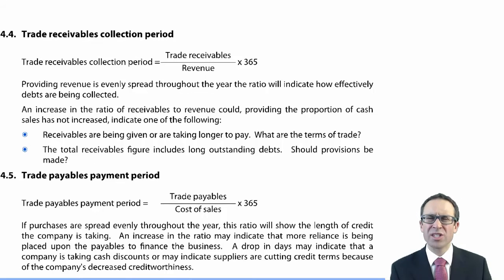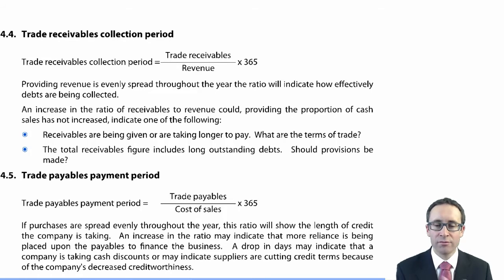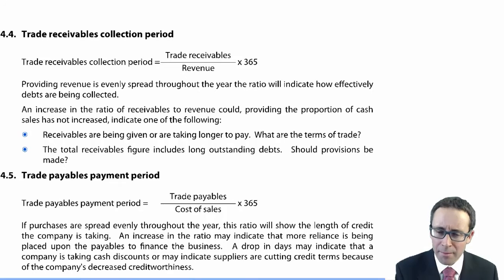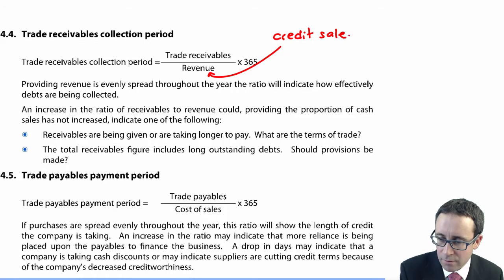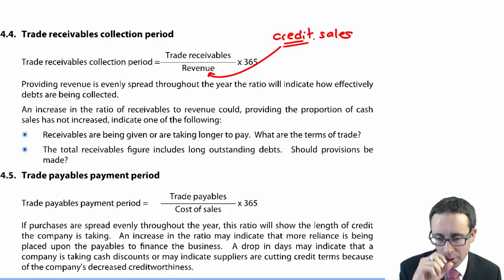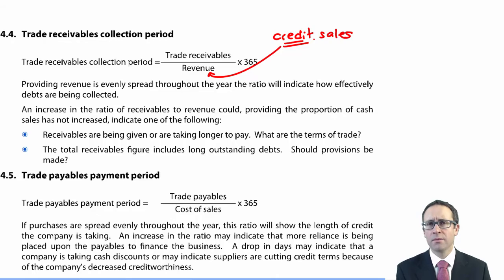We then have the trade receivables collection period, or receivable days. It takes the receivables figure from the statement of financial position and divides it by sales. Technically, from a management accounting perspective, that should be your credit sales. If cash sales are minimal, use total revenue, but specifically we should be using credit sales.